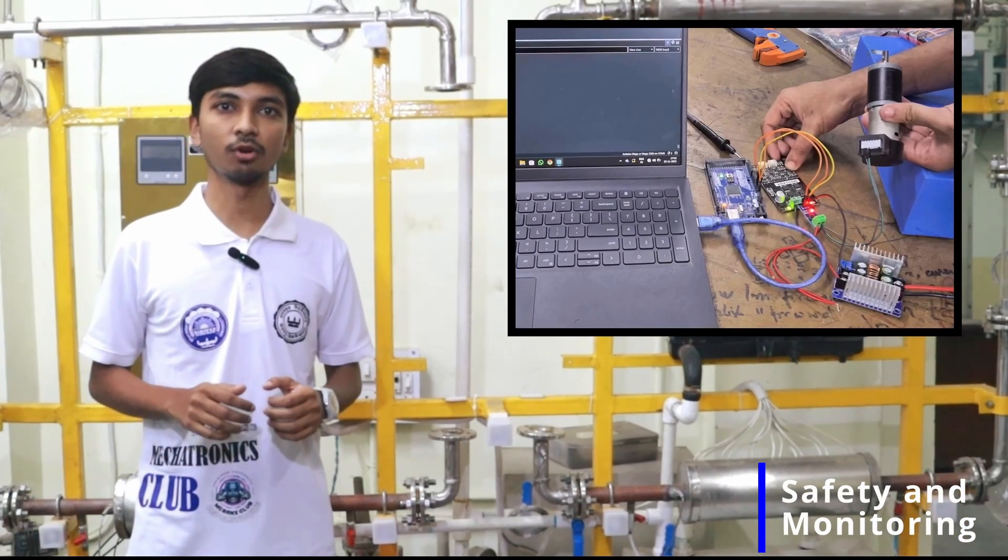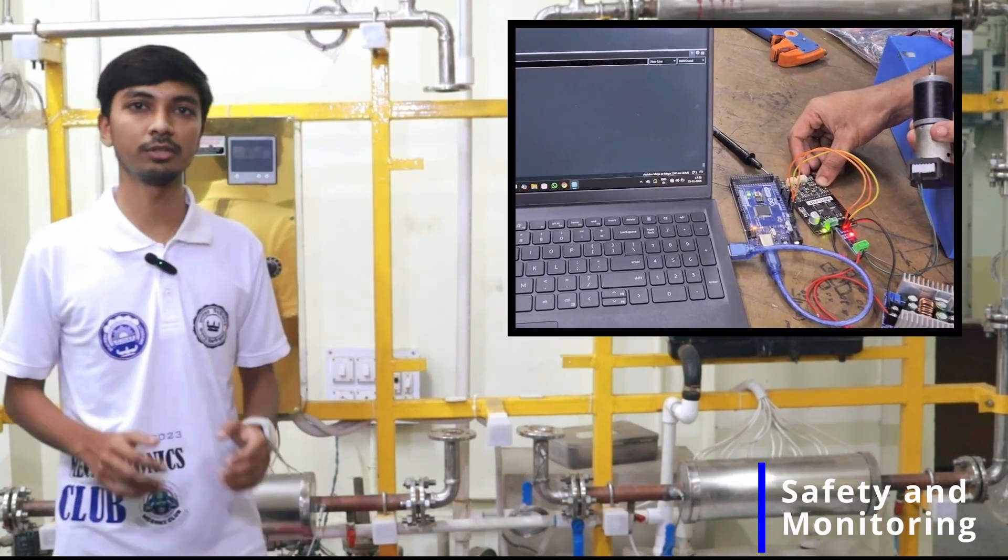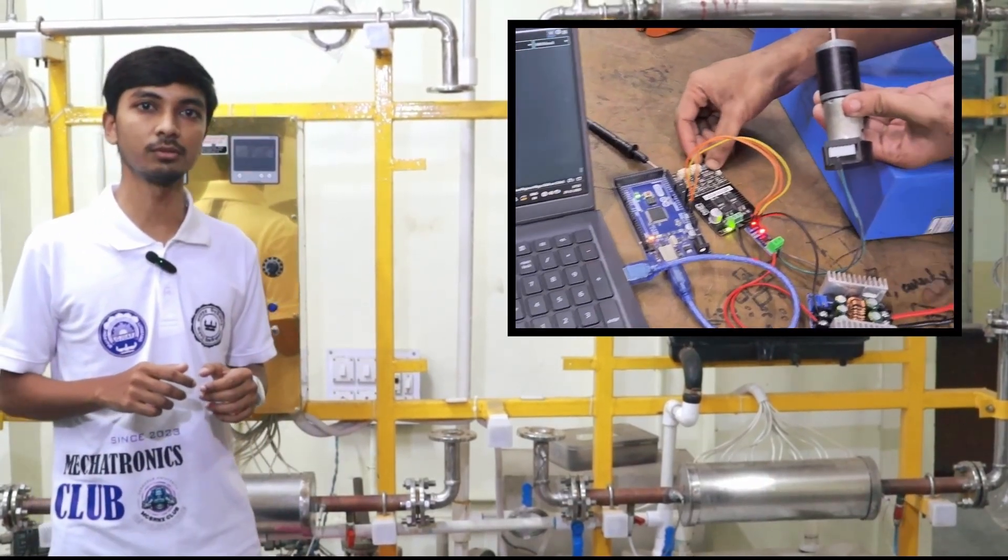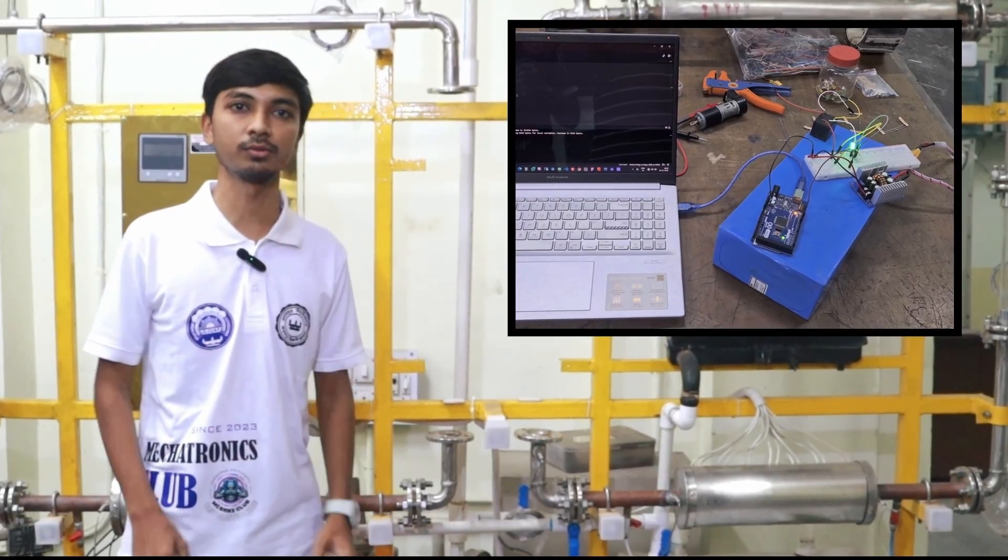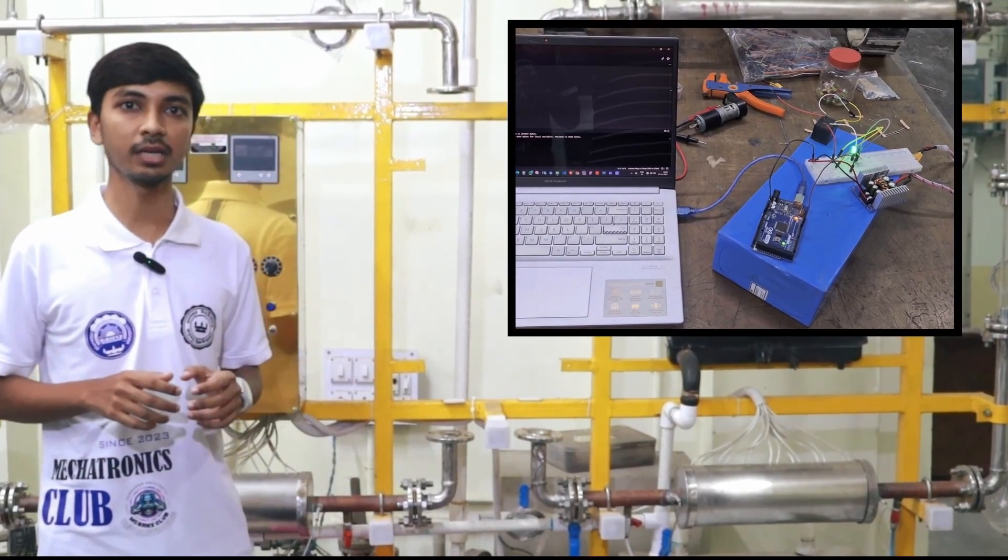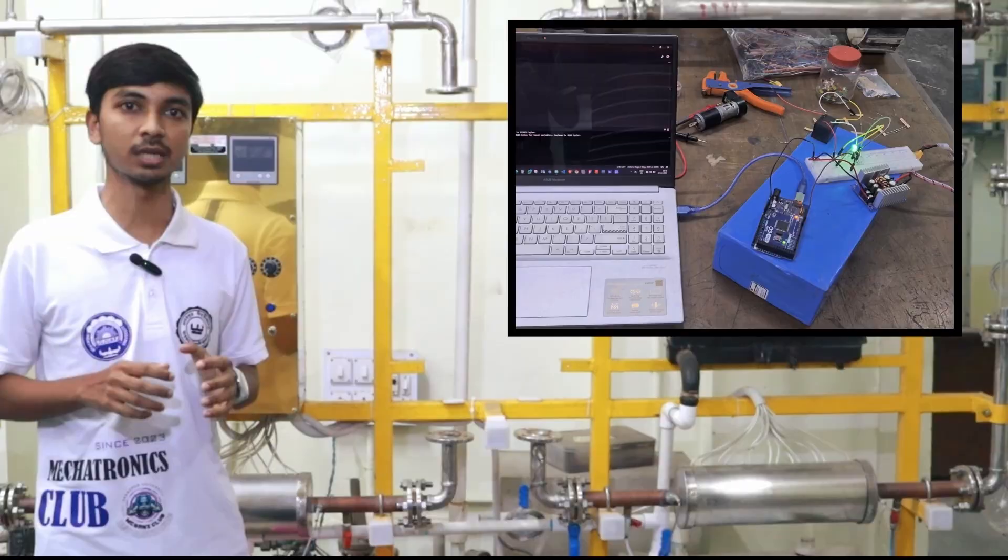Safety is paramount. An onboard Arduino Mega continuously monitors the system using ACS712 current sensors. If any rail exceeds safe limits, it instantly isolates the fault using onboard relays while communicating status to the main computer via CAN bus.